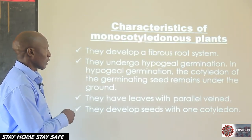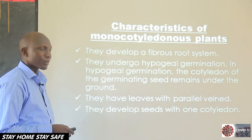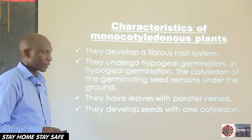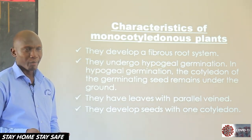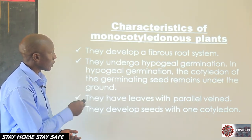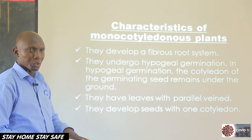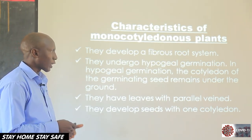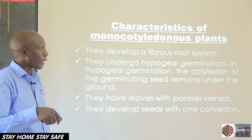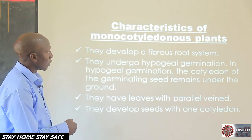What about the characteristics of monocotyledonous plants? One, they develop a fibrous root system. Two, they undergo hypogeal germination — that implies that the cotyledons remain underground. Three, they have leaves with parallel leaf venation. Four, they develop seeds with only one cotyledon. The fibrous root system means the roots don't go deep in the soil; they are shallow roots. Hypogeal germination is a type of germination where the cotyledons remain underground. They also have leaves with parallel leaf venation, and their seeds have one cotyledon. These are what we call monocotyledonous plants.